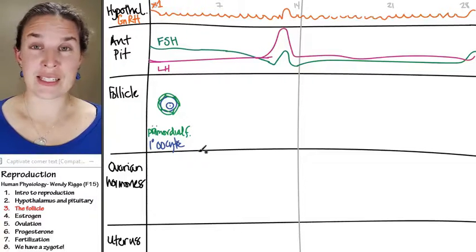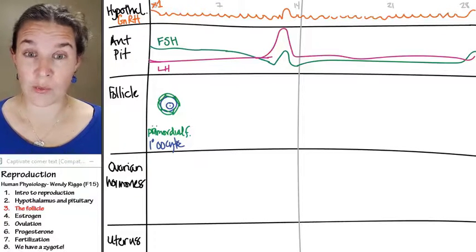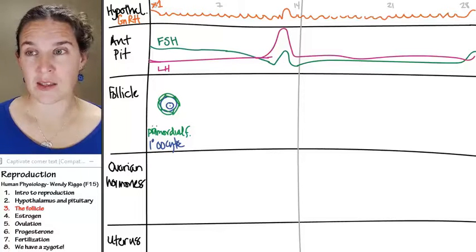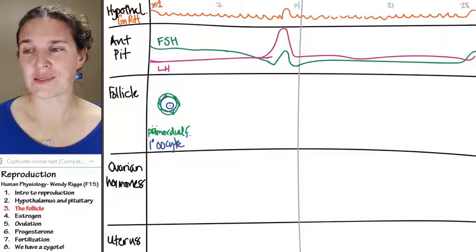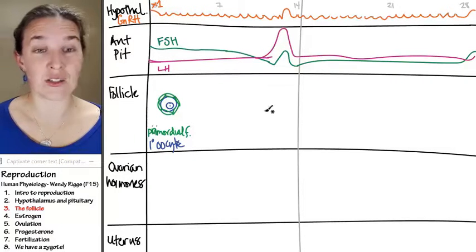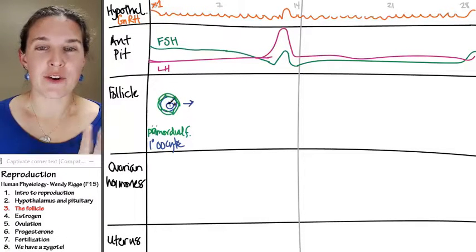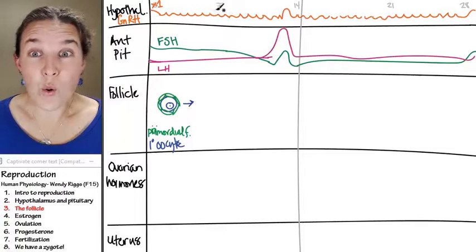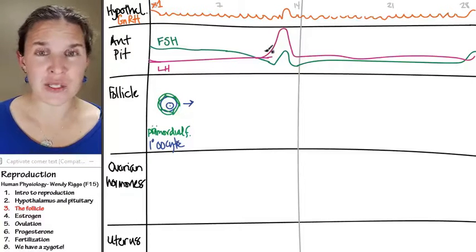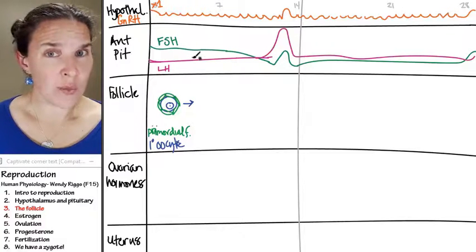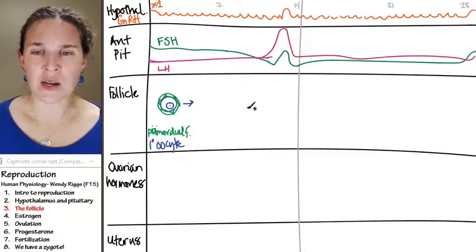Now, follicle-stimulating hormone. Who do you think the follicle-stimulating hormone is stimulating? Follicle. And I'm not going to go into all the crazy details. We'll avoid those crazy details. You can go to anatomy to look for those. But I'm just going to do a really quick, from here, over the course of 14 days, and under the influence of follicle-stimulating hormone, the follicle is going to grow. Luteinizing hormone plays a role as well, and we'll talk about that in a second.